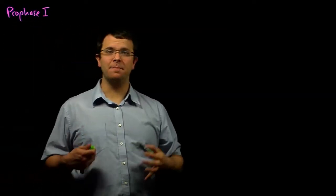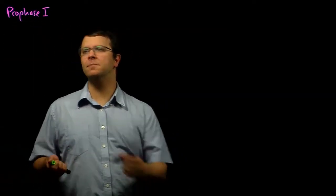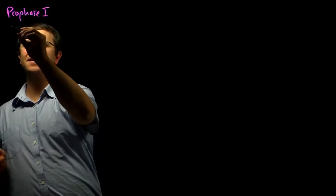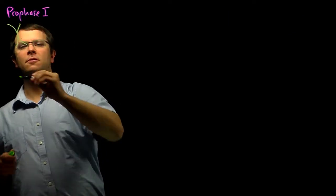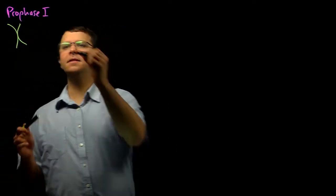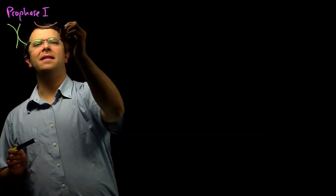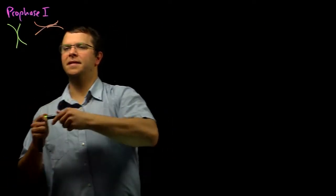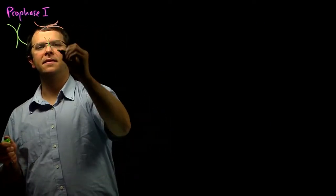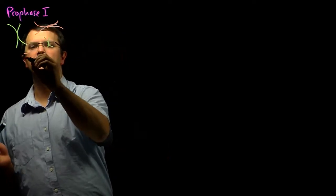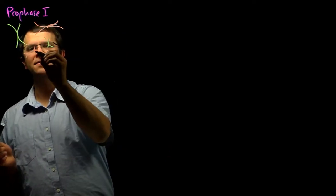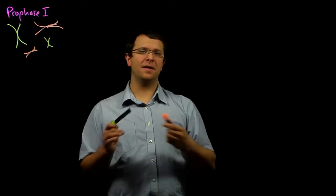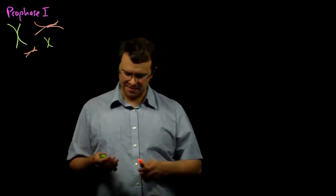And so I'll draw two homologous pairs of chromosomes, four chromosomes in total, and I'll try to make it obvious which chromosomes are pairs because I'll make them substantially different in size. So these chromosomes have condensed. We can see them in a microscope.